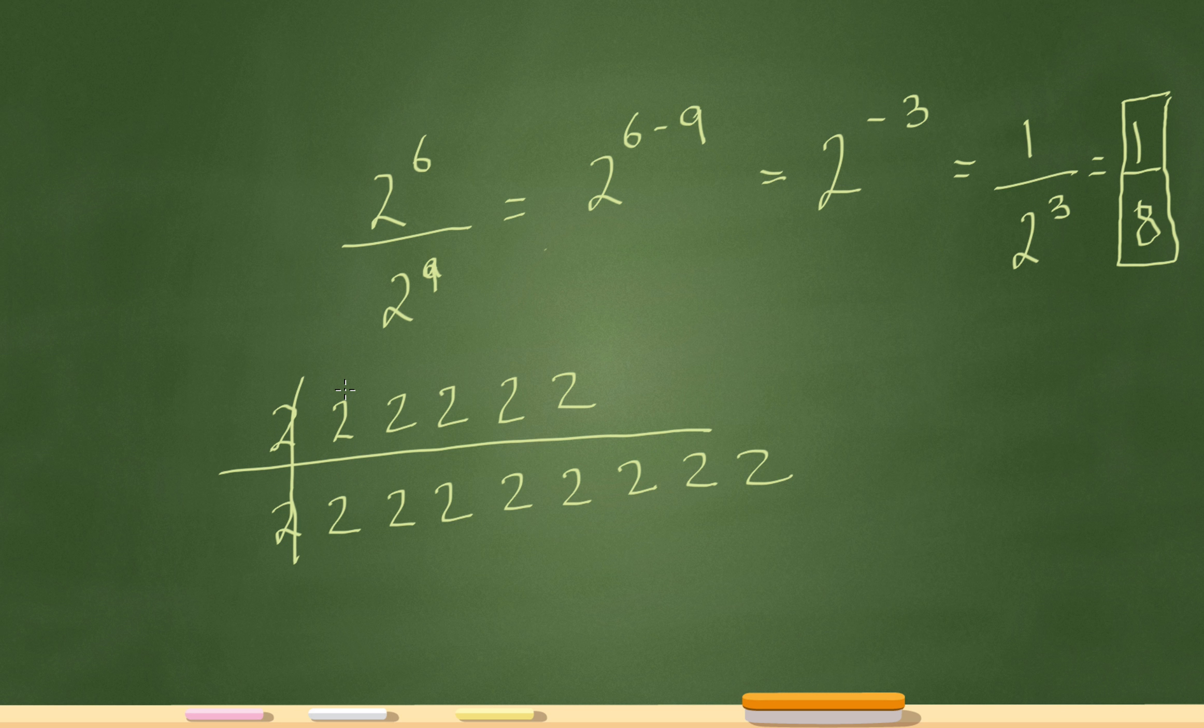Now that 2 and that 2 cancels out. That cancels out. That cancels out, that cancels out. That's gone. So at the top I'm left with, because 2 divided by 2 is 1, so at the top I'm just left with 1. And at the bottom I'm left with 2 times 2 times 2, which is 8. 1 over 8.